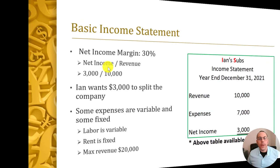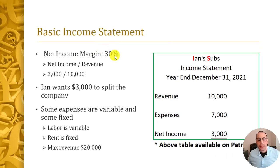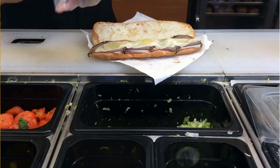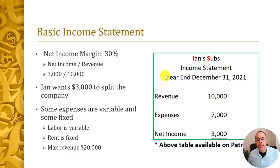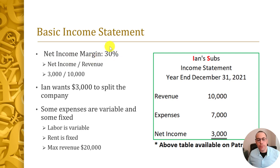Here's a really basic income statement. Your friend Ian owns a sub shop called Ian Subs, and for the entire year of 2021 his income statement shows revenue of $10,000, expenses of $7,000, and net income of $3,000. Not much information — the only thing we can figure out is his net income margin of 30%, which is net income over revenue, or $3,000 over $10,000.